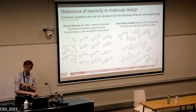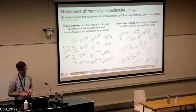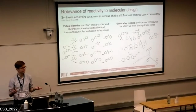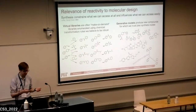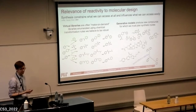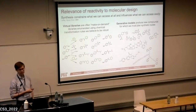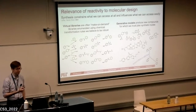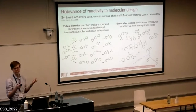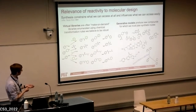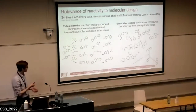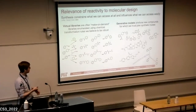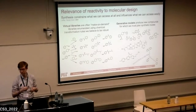Reaction informatics is a subfield of cheminformatics. We care about reactions because we have to worry about synthetic chemistry when it comes to actually accessing the molecules we design. Whether we use enumeration schemes or virtual make-on-demand libraries like Enamine REAL Space, the way we define accessible chemical space is by taking purchasable molecules, known reaction transformations, and enumerating billions of compounds.